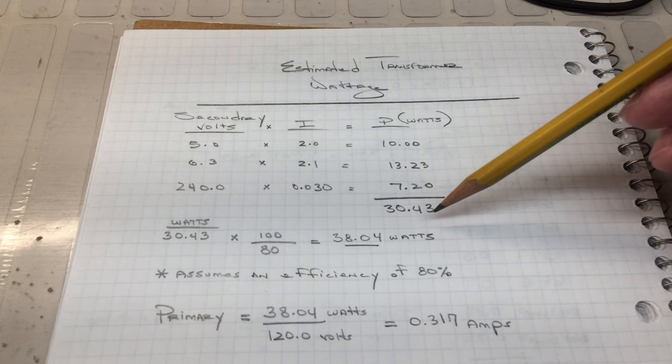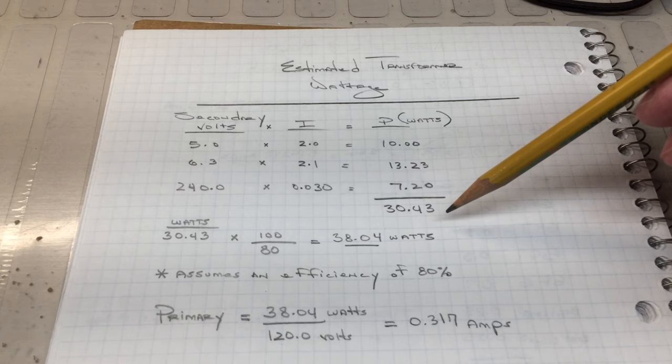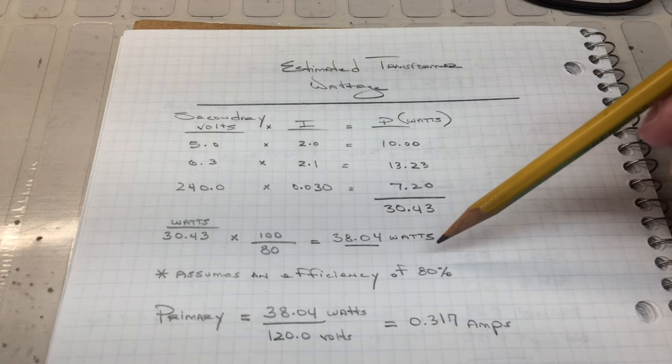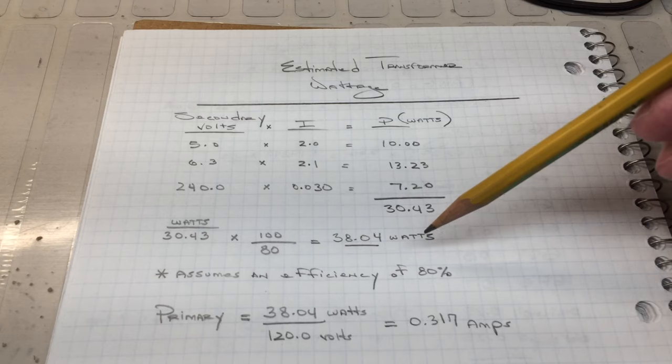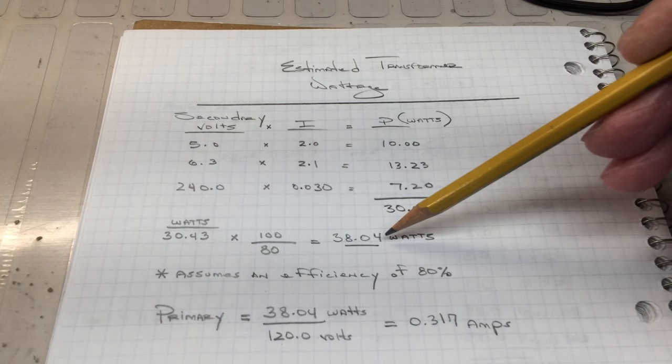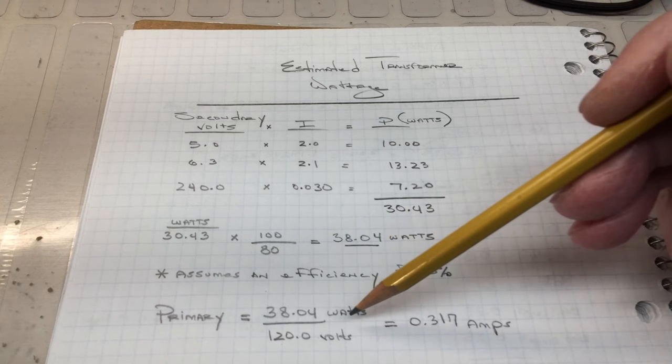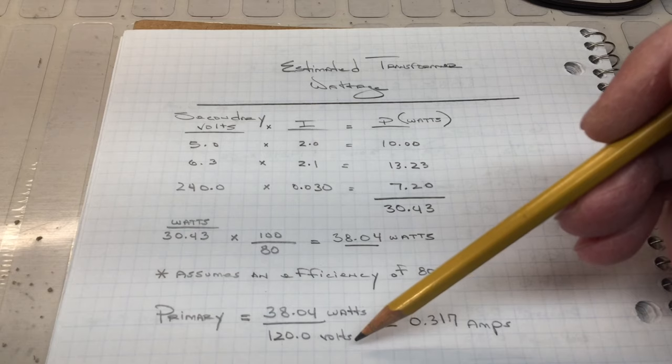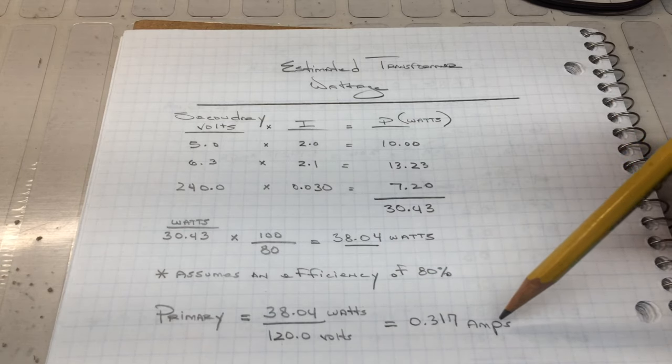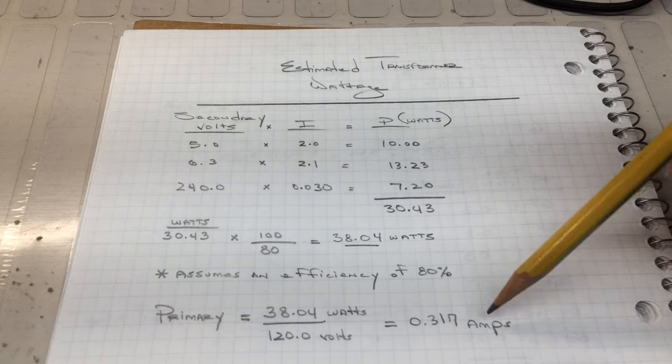And you can see we're just north of 30 watts of power. Again, assuming the transformer only has an 80% efficiency, that might be a little low, maybe it's better than that, but probably not. That brings us up to 38 watts. I can take the 38 watts, divide that by 120, and that comes up to about 0.317 amps of current that would flow on the primary side.